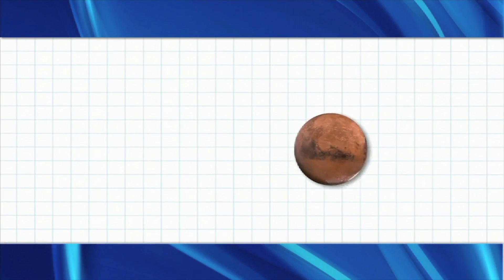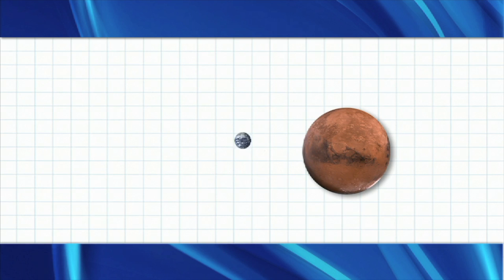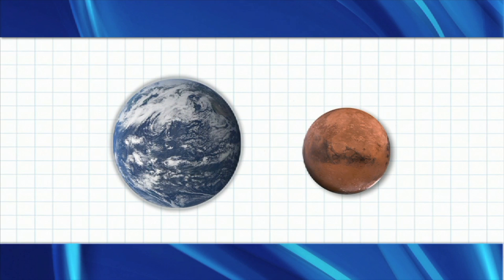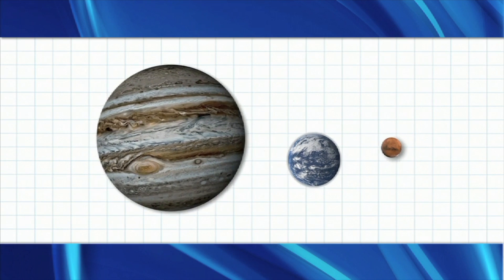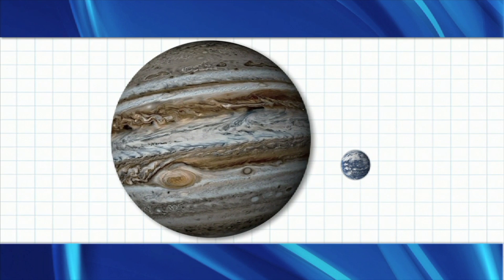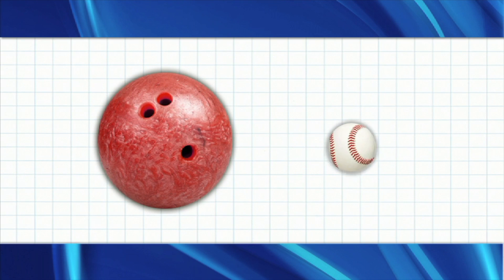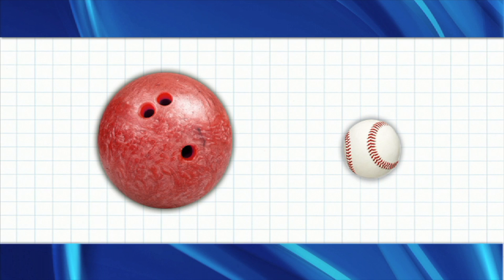Mars is smaller, therefore has less gravity than Earth. But Earth is smaller than Jupiter and has much less gravity than Jupiter. A bowling ball has much more gravity than a baseball because it is bigger.